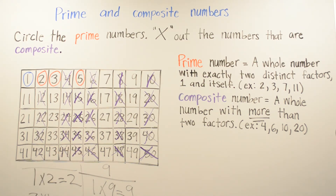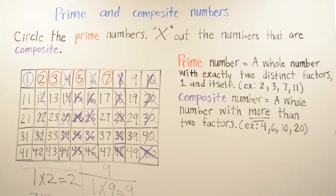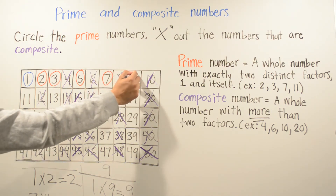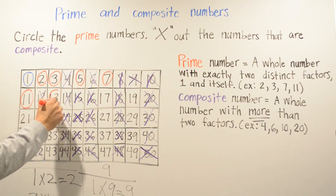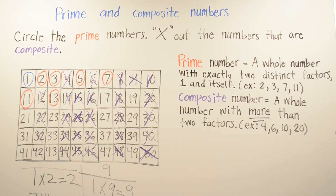Now we go to 7. 7 is going to be a prime number because the only numbers you can multiply are 1 times 7 and 7 times 1 — only 1 and itself. Then 9 is going to be a composite number because you can multiply 3 times 3, as shown in the earlier example. 11 is a prime number because you can only multiply 1 and itself. And 13 is also a prime number — 1 and itself when you multiply.